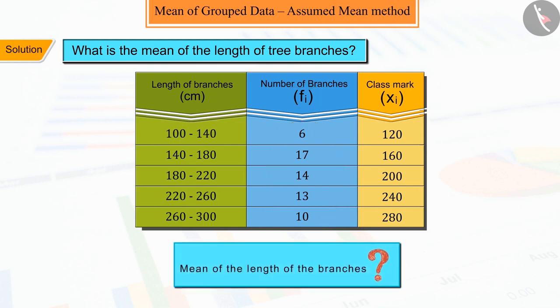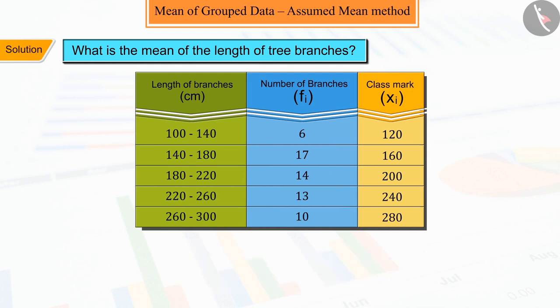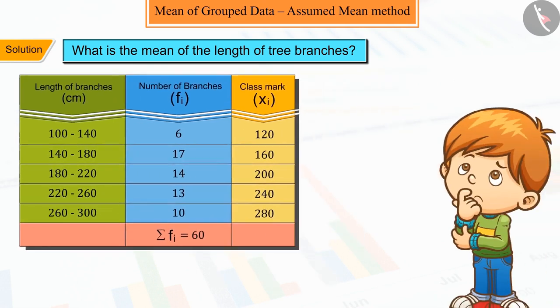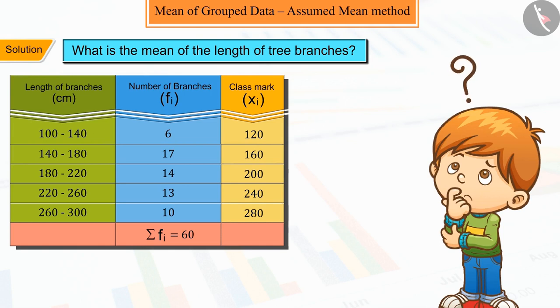Since we have to find the mean of the lengths of the branches, which can be calculated by dividing the summation of the product of fi xi by the summation of fi, but it takes more time. So how can you make it simpler?